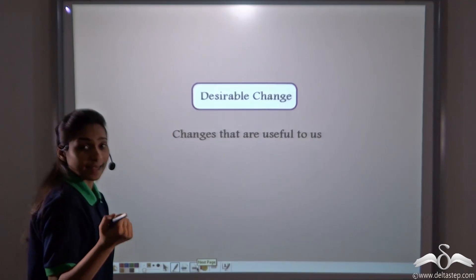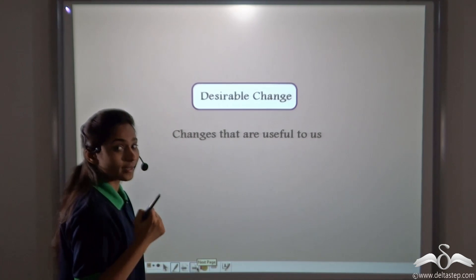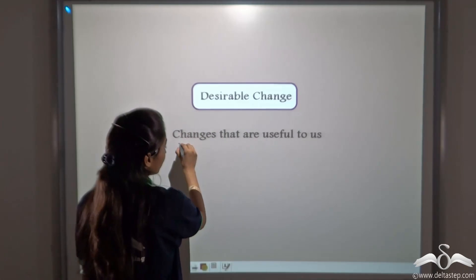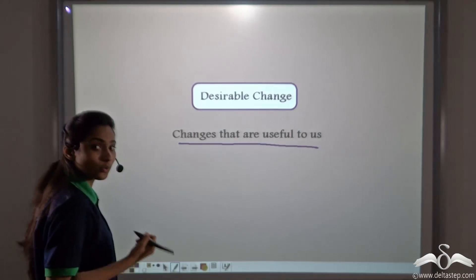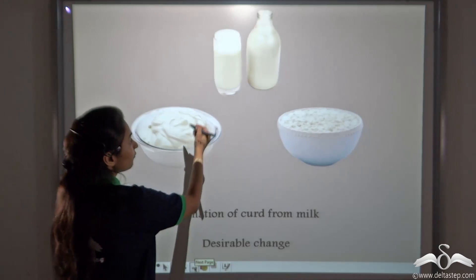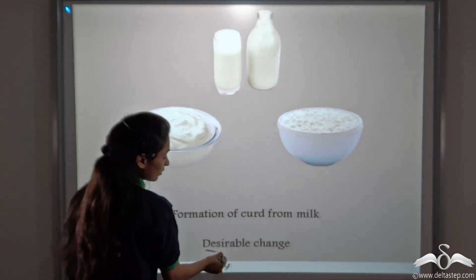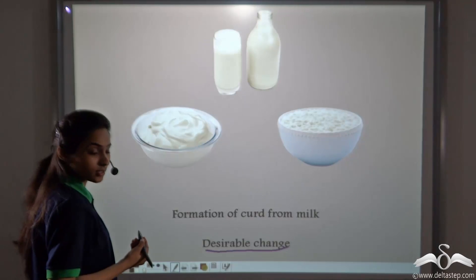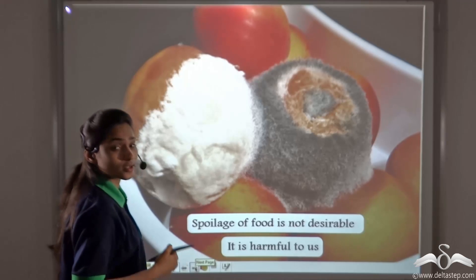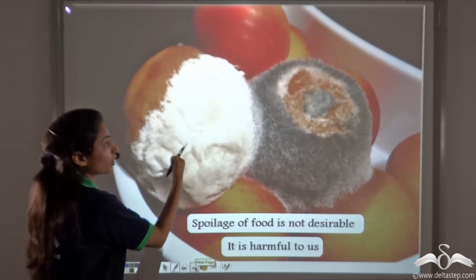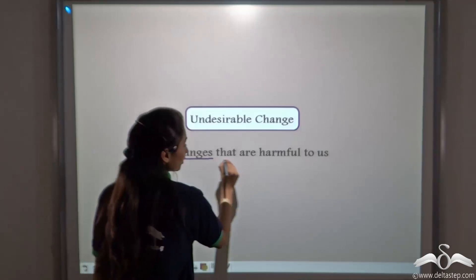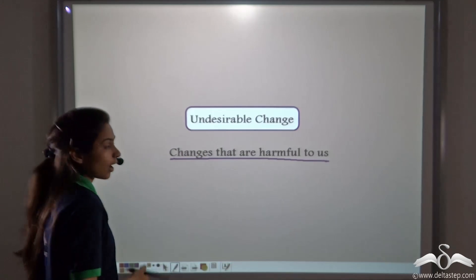So we can say that changes can be classified into two ways: desirable change and undesirable change. Desirable changes are changes that are useful to us, that we want to happen — such as formation of curd from milk. Curd forms from milk overnight, and this is desirable as we want to taste it. Spoilage of food is not desirable because it is harmful to us and we cannot eat spoiled food. An undesirable change is a change that is harmful to us and that we do not want to happen.